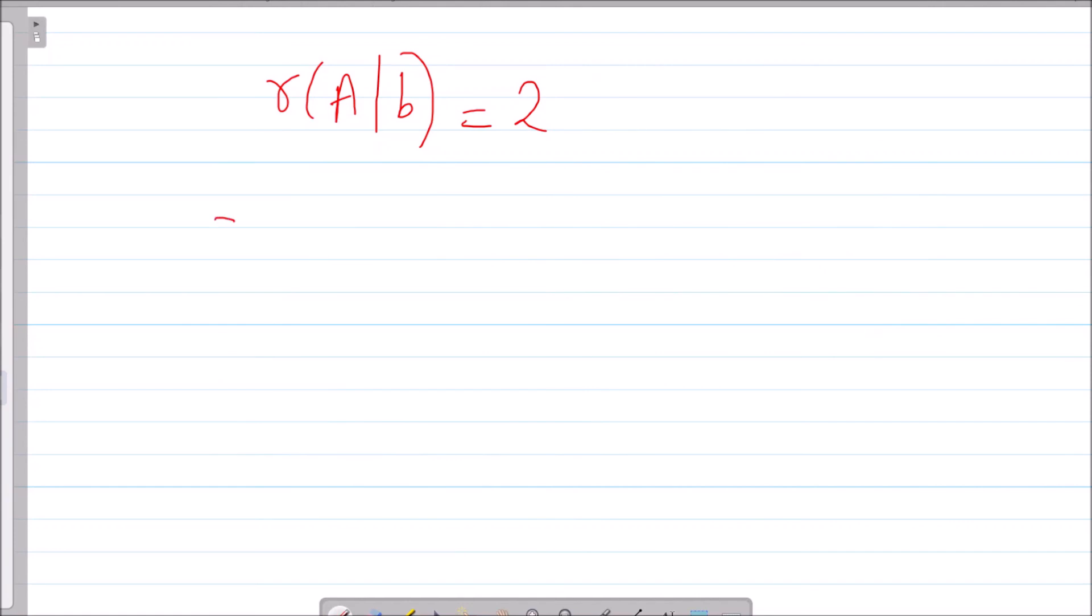What about rank([R|b])? R is [1, 0, 0, 0; 0, 1, 1, 0; 0, 0, 0, 0; 0, 0, 0, 0] and b is [1, 1, 1, 0]. What is rank([R|b])?